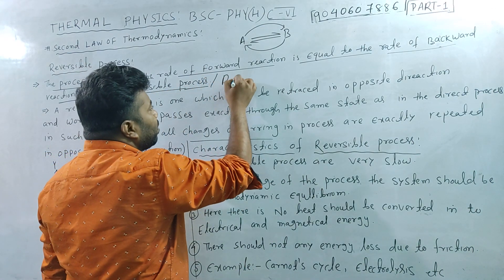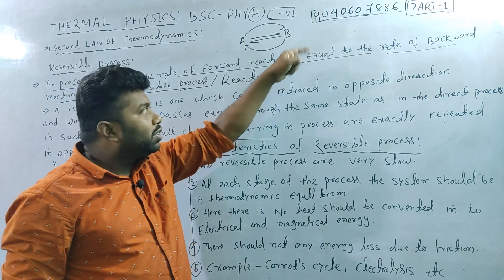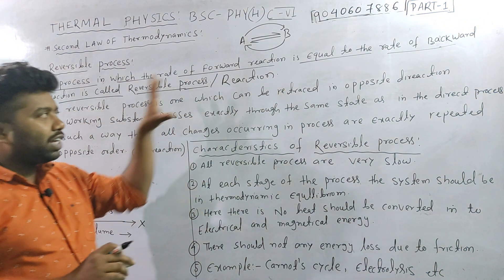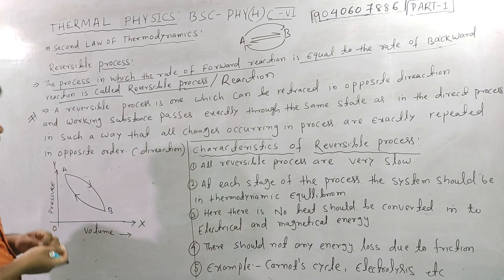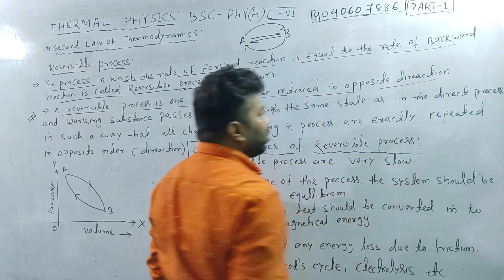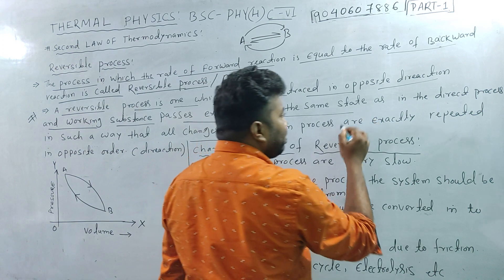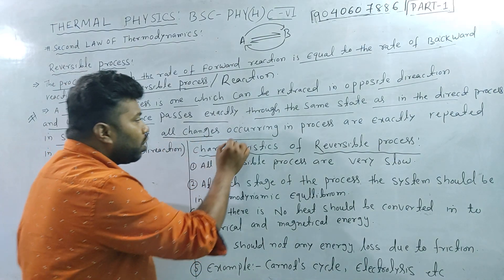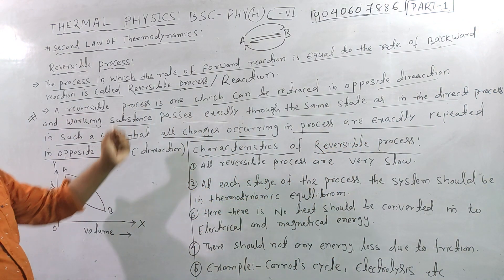This is a reversible reaction. When the rate of forward reaction is equal to the rate of backward reaction — rate A to B is equal to rate B to A — this is the process of reaction. A reversible process is one which can be retraced in the opposite direction, and the working substance passes exactly through the same state as in the direct process, in such a way that all the changes occurring in the process are exactly repeated but in opposite order or opposite direction.